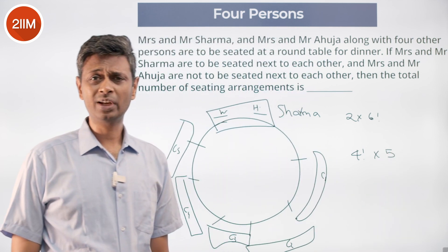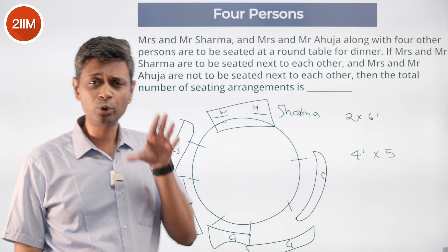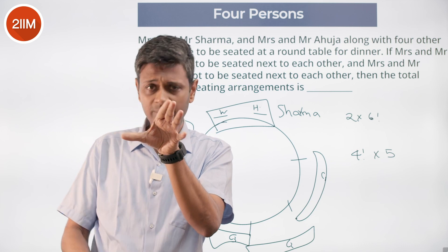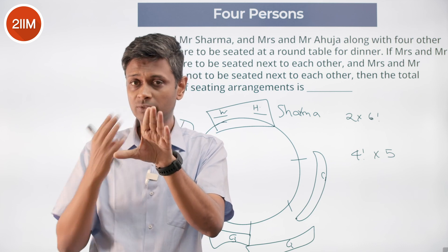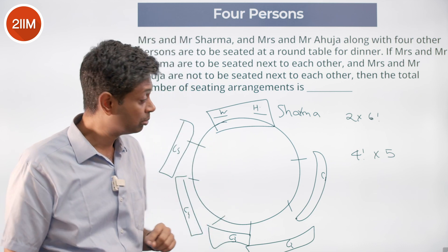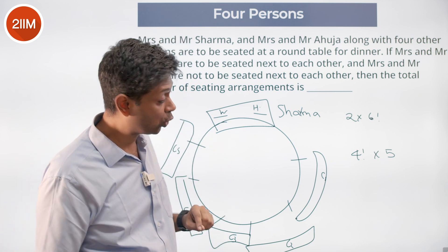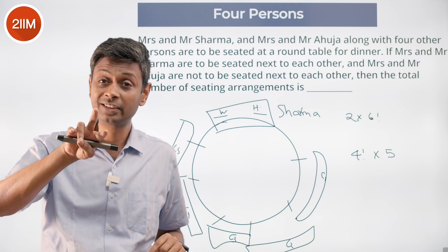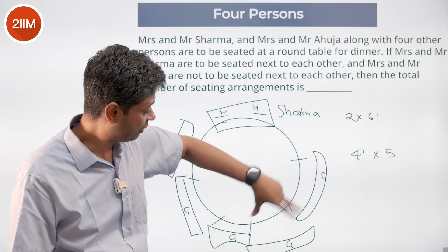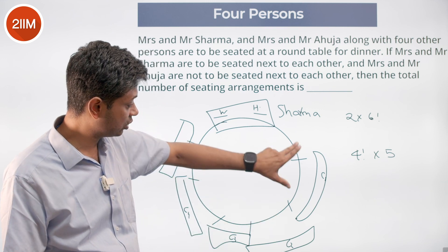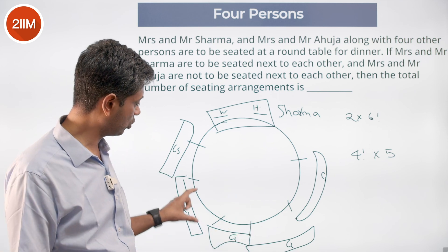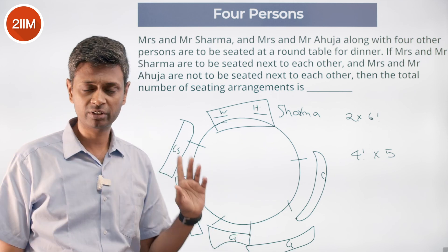Why four factorial? After placing Mrs. and Mr. Ahuja, four seats are remaining and four people fill them in four factorial ways. Why 5? Mrs. and Mr. Ahuja could be seated next to each other in five different adjacent combinations: seats 1 and 2, 2 and 3, 3 and 4, 4 and 5, or 5 and 6.